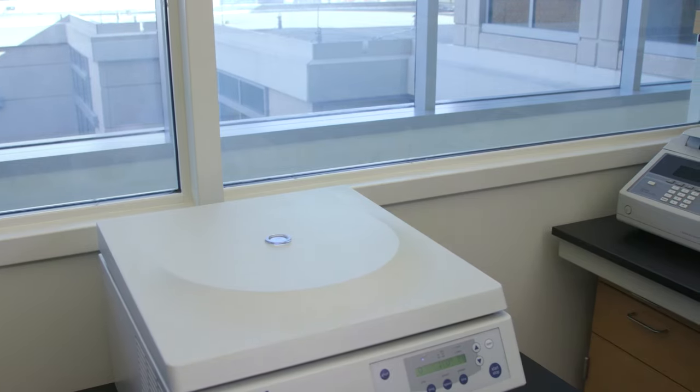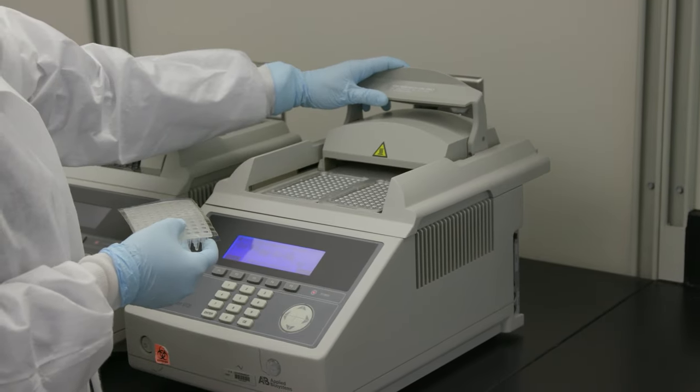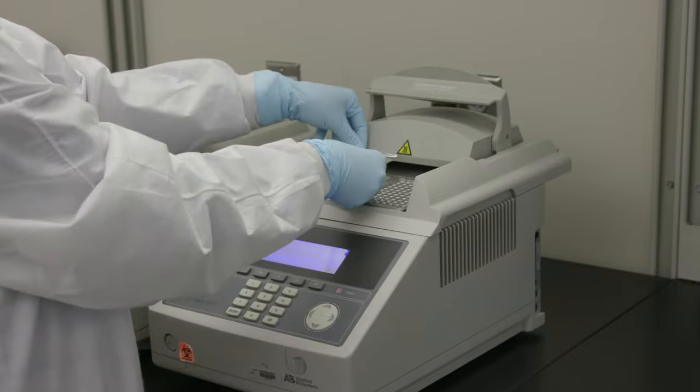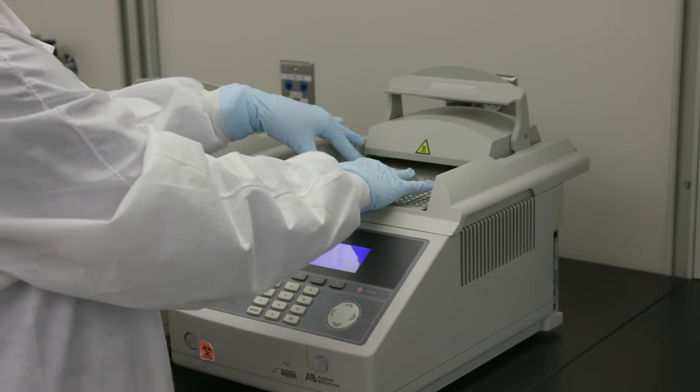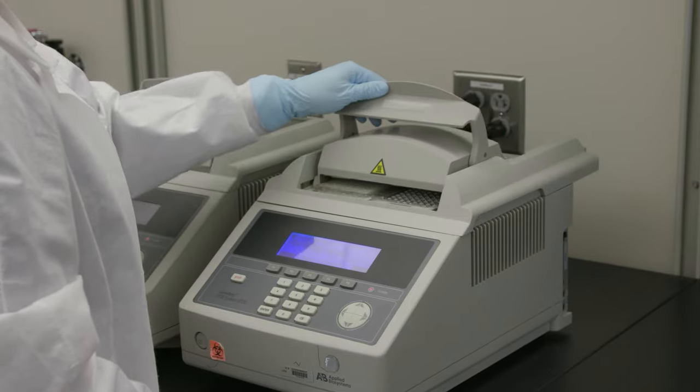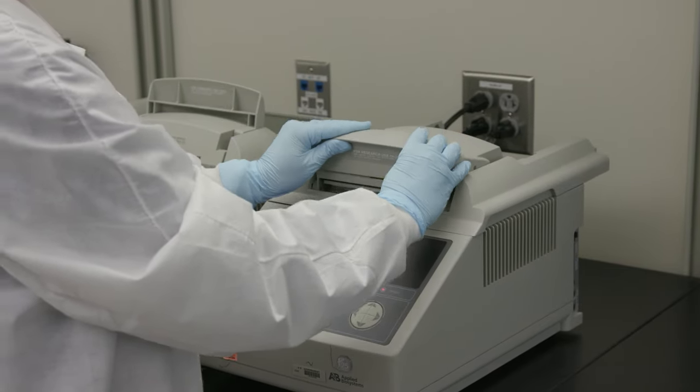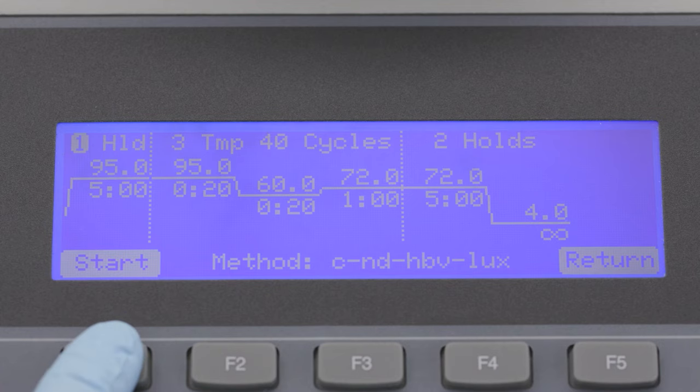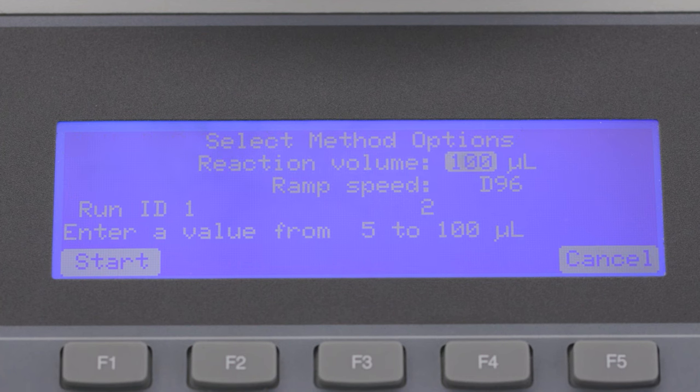Following the denaturation step is the annealing step. The temperature is decreased so that the primers can anneal to the complementary sequences on the DNA templates. The temperature of the annealing step depends on the melting temperature of the primer.